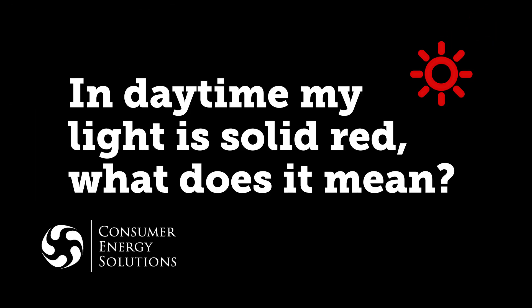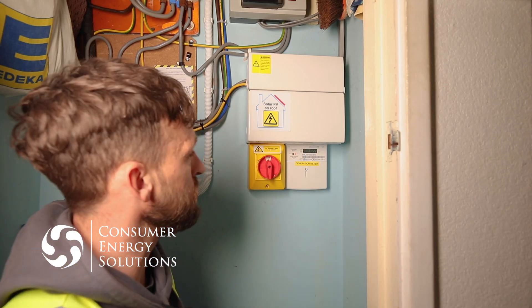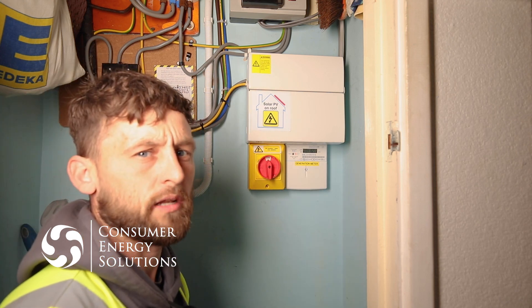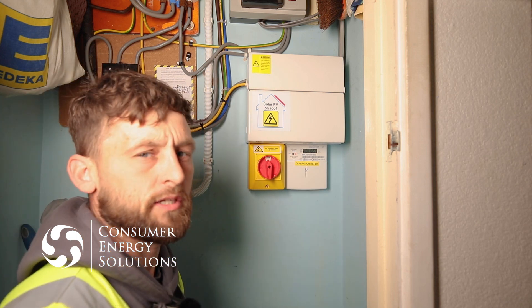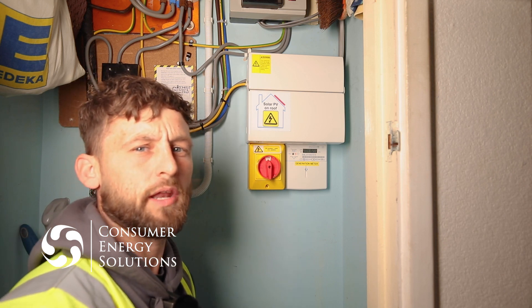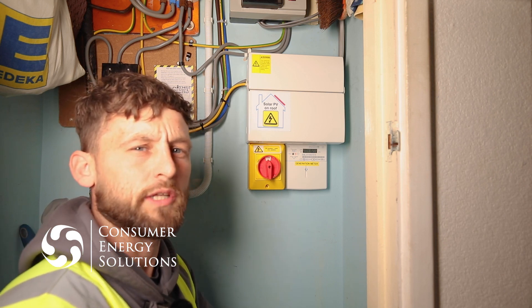It's important to check your generation meter regularly. What I'd like to do is show you where to find it, what it looks like, and how to identify any potential problems. When checking our generation meter, if you identify that it is a solid red light, this is the first stage of identifying there could potentially be an issue with your solar installation.